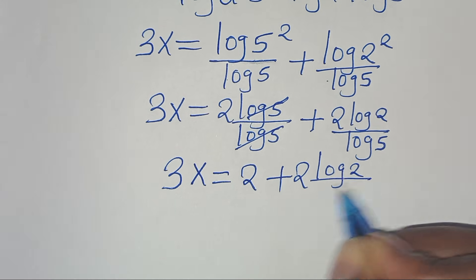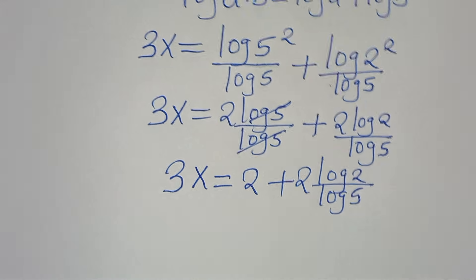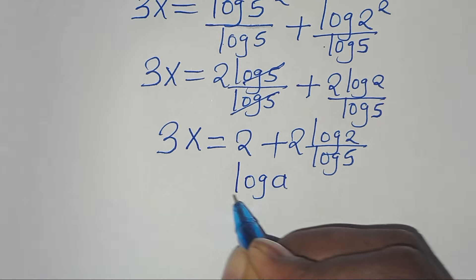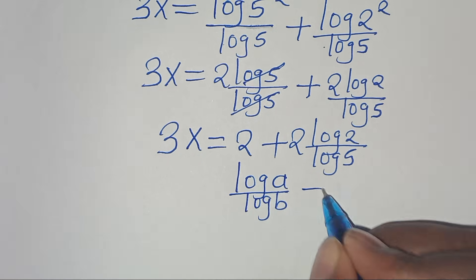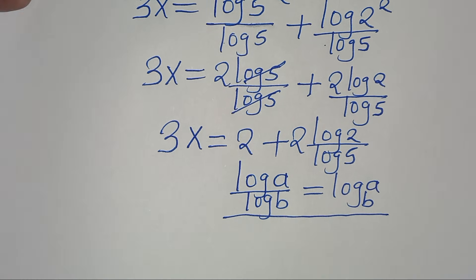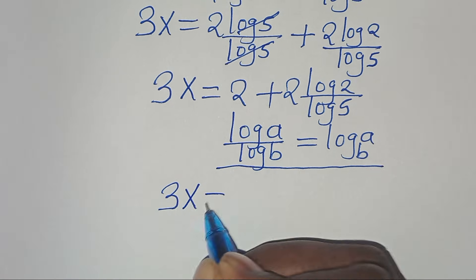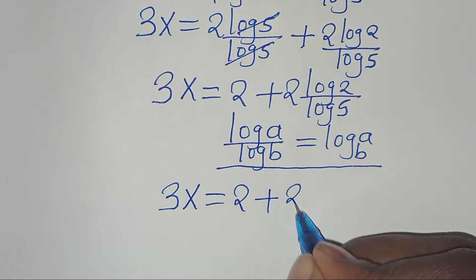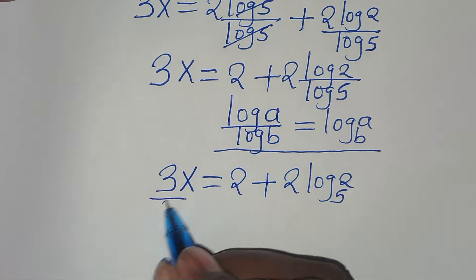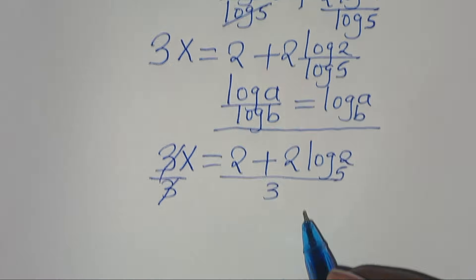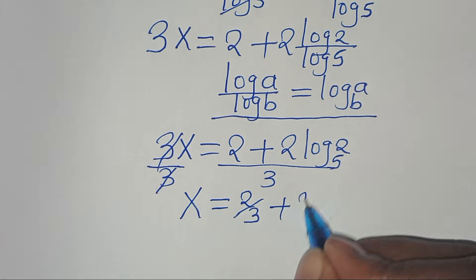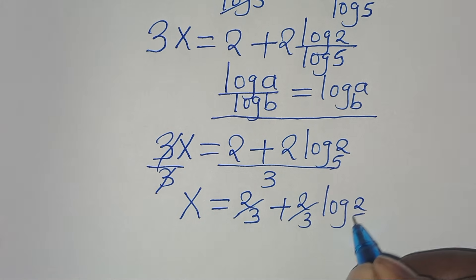We have that log 2 over log 5 is in the form of log a divided by log b, which we can express as log base b of a. Applying this logarithm property, 3x equals 2 plus 2 times log base 5 of 2. Now dividing both sides by 3, we have x equals 2 over 3 plus 2 over 3 times log base 5 of 2.